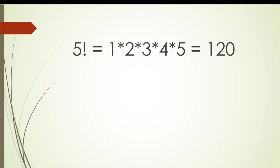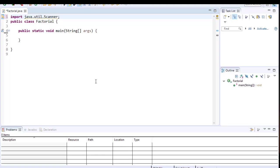One of the options to compute the factorial is obviously a loop. We could simply loop five times and within the body of the loop we could perform all the calculations.